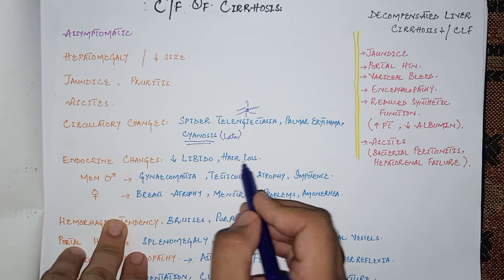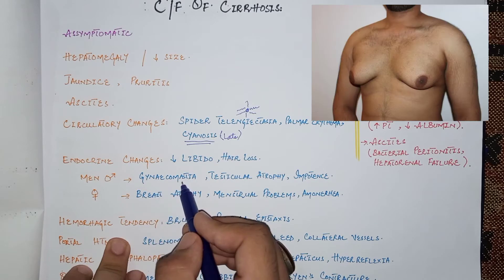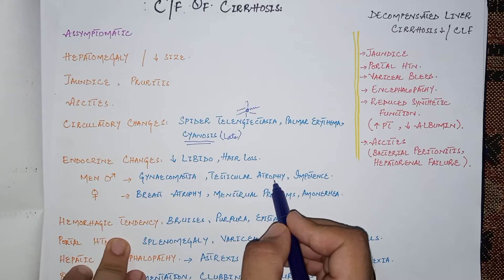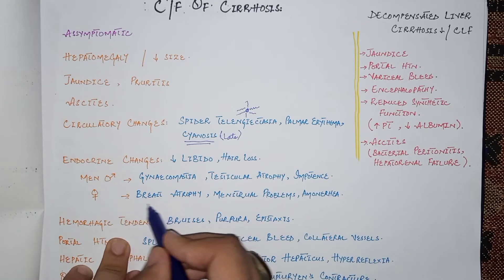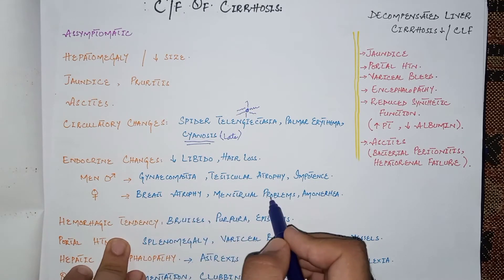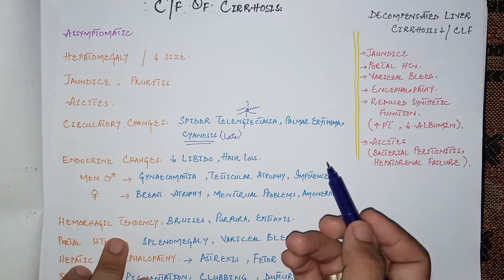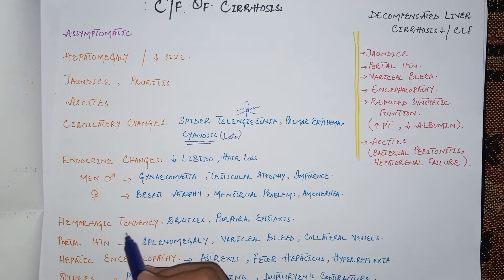Endocrine changes in cirrhosis are due to high estrogen levels. These include decreased libido, hair loss from the body, and in men: gynecomastia (enlargement of the male breast), testicular atrophy, and impotence. In females, breast atrophy, menstrual problems, and amenorrhea can occur.